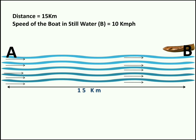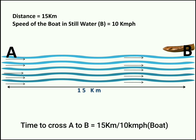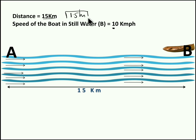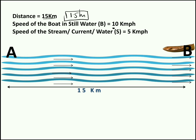Now with this information, if I ask you to find the time taken by Rahul to reach B, you might say time equals distance divided by speed. Here distance is 15 kilometers and speed of the boat is 10 kilometers per hour, so 15 divided by 10 is 1.5 hours. But here the boat is moving in a river and river water has movement, so the speed of the stream or current or water is 5 kilometers per hour.